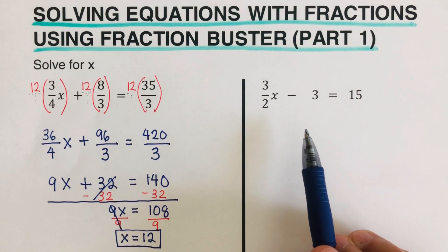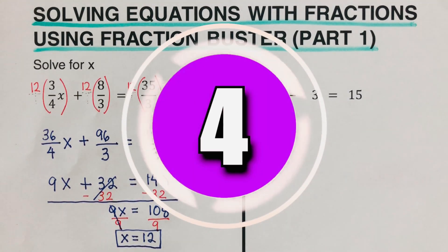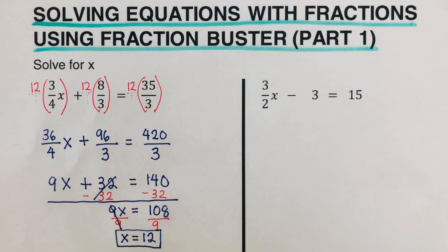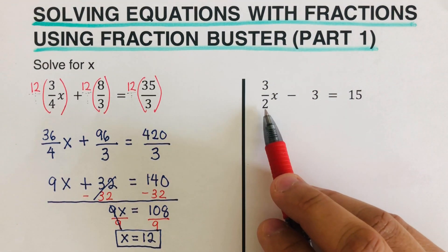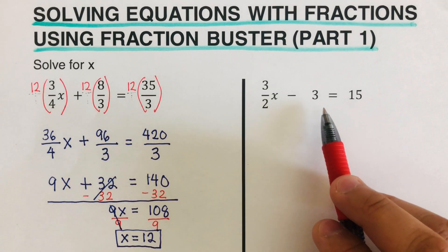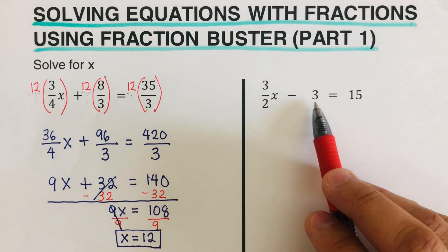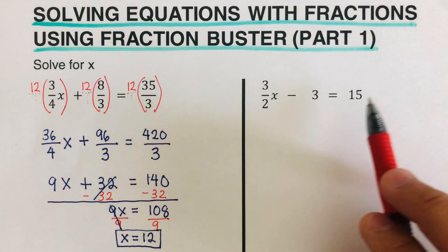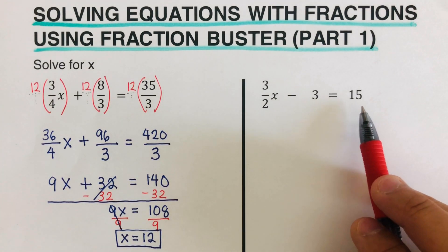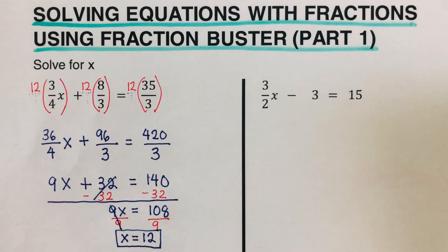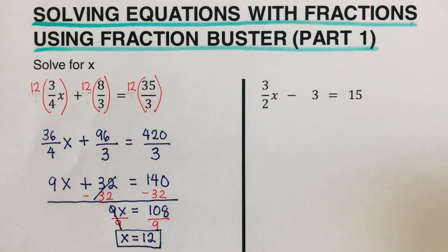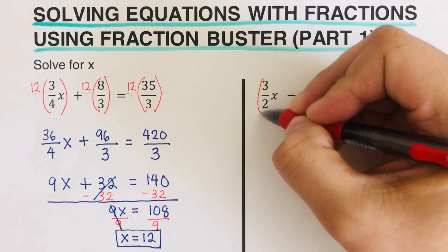Let's go over the next problem. We're going to find the LCM. We only have a denominator of 2 here — but remember, whole numbers have an invisible denominator of 1. So the 3 and the 15 each have an invisible denominator of 1. The denominators are 2, 1, and 1, so the LCM is 2.